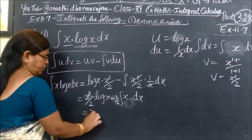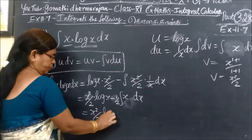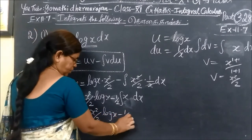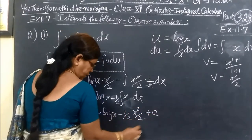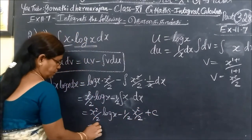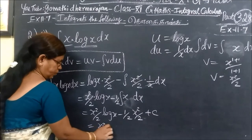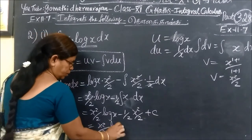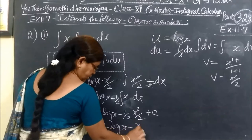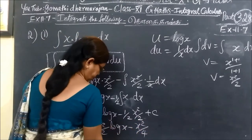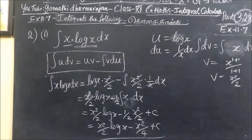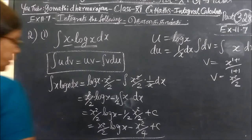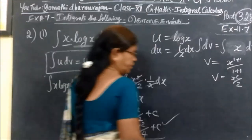So this is equal to x squared by 2 log x, minus x squared by 4 plus c. So the answer is x squared by 2 log x minus x squared by 4 plus c.